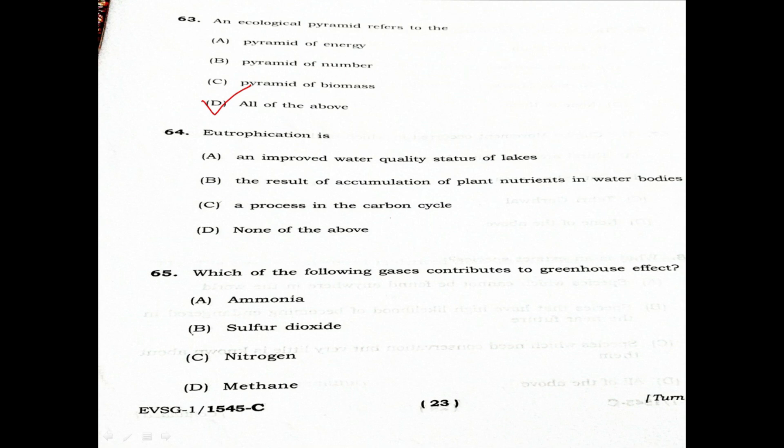Question 64: Eutrophication is. Option A: An improved water quality status of lakes. Option B: The result of accumulation of plant nutrients in water bodies. Option C: A process in the carbon cycle. Option D: None of the above.